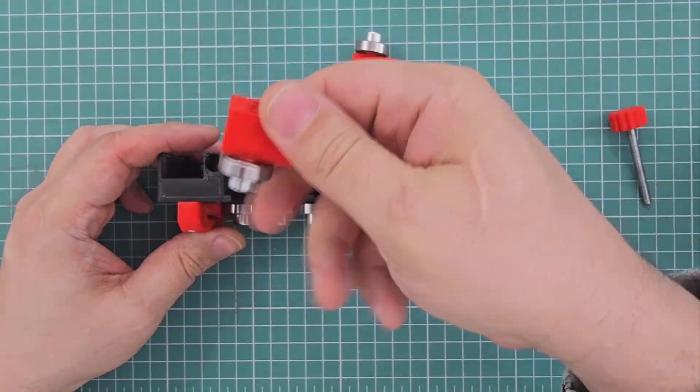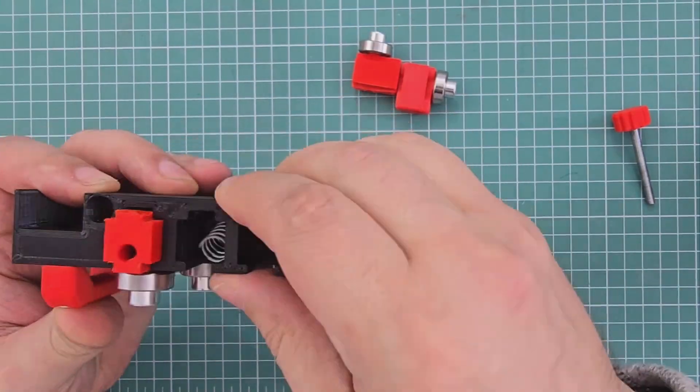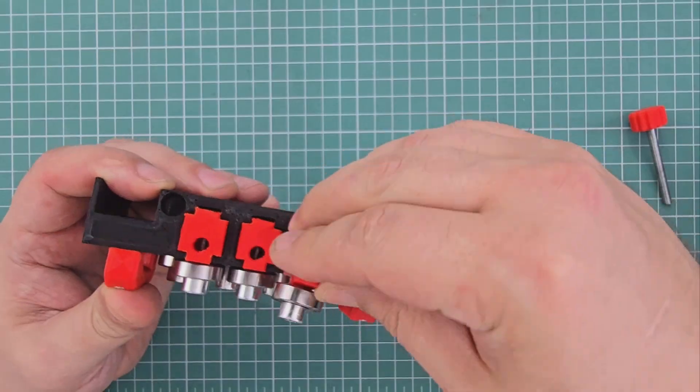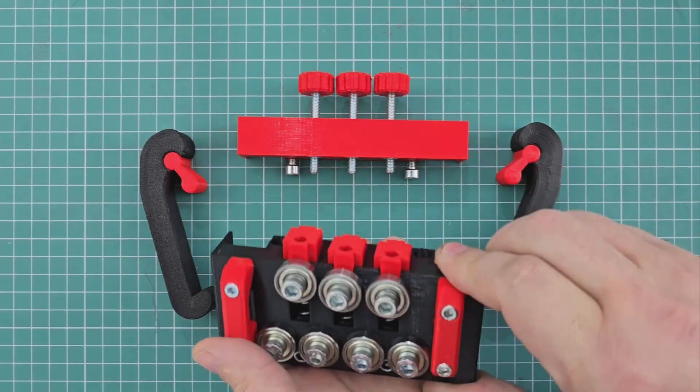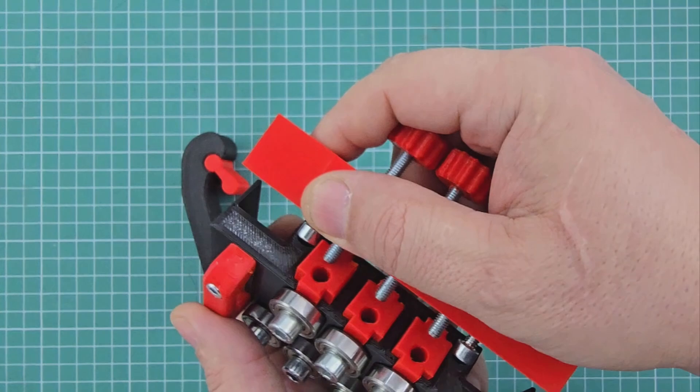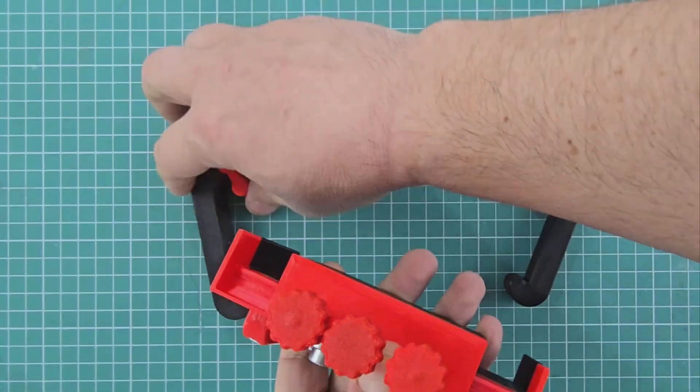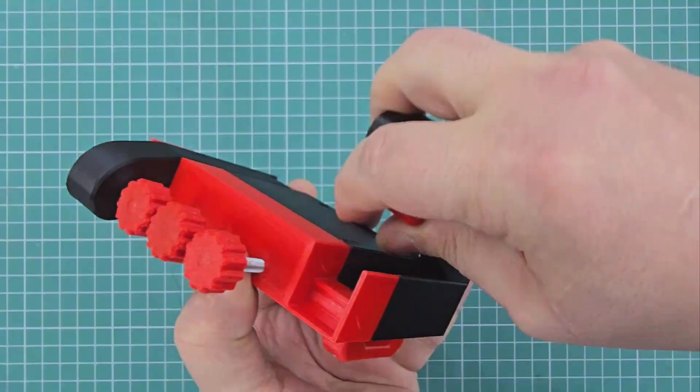And now I'm installing the adjustable bearing blocks. With all this in place it's time for the final step. Installing the top with the quick release latches.